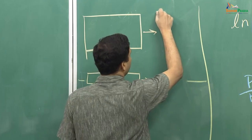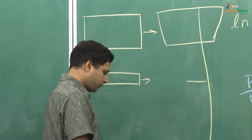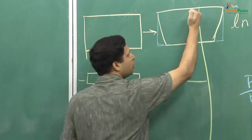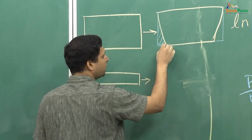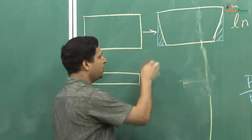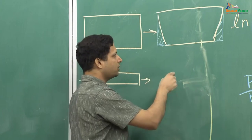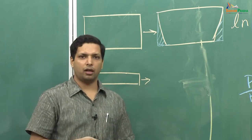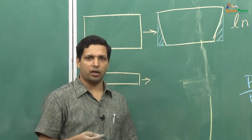If you were to sinter this, it will probably shrink something like this — and I am drawing it in an exaggerated way. What I am trying to show is that the shrinkage would be larger in the region where the pressure was smaller, or the density was smaller. The relative density in that region was smaller, so it was not packed or compacted as efficiently, and therefore shrinkage there would be larger.